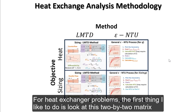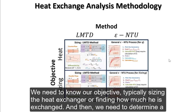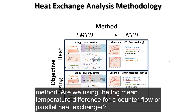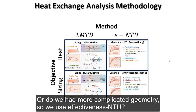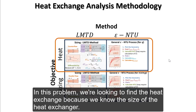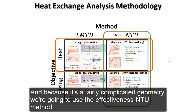For heat exchanger problems, the first thing I like to do is look at this 2x2 matrix. We need to know our objective — typically sizing the heat exchanger or finding how much heat is exchanged — and then we need to determine a method. Are we using the log mean temperature difference for a counter flow or parallel heat exchanger? Or do we have more complicated geometry, so we use effectiveness-NTU? In this problem, we're looking to find the heat exchange because we know the size of the heat exchanger, and because it's a fairly complicated geometry, we're going to use the effectiveness-NTU method.